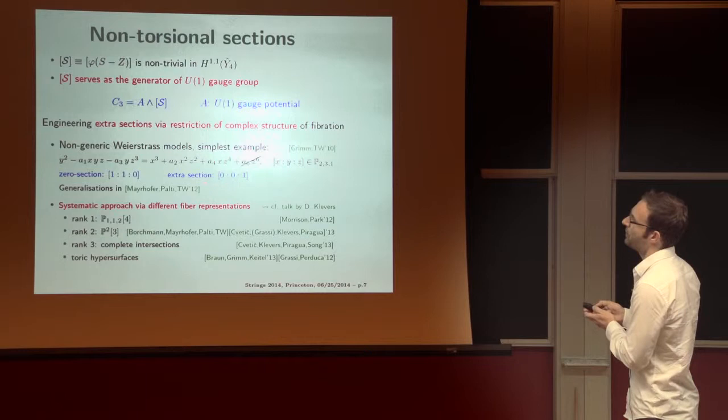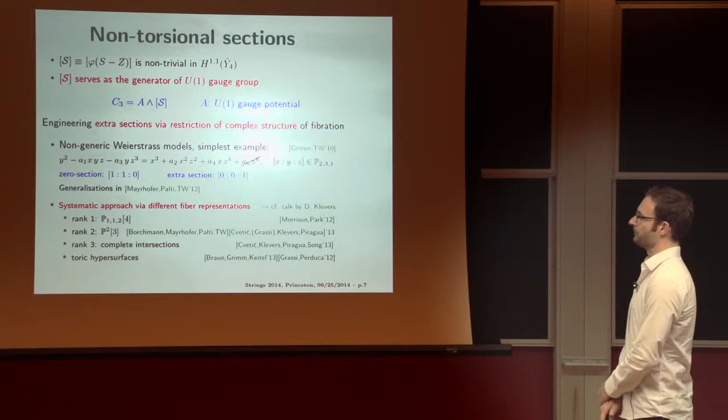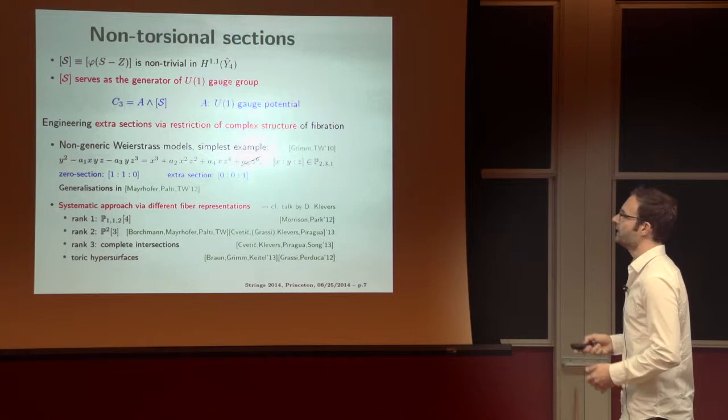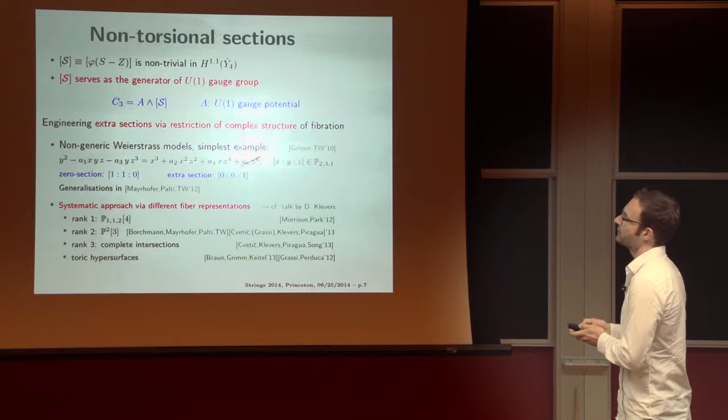And indeed, this can be generalized to factorized Tate models. To treat those models systematically, however, it is more convenient to start by a different type of representation as we heard before break. So for the most general rank 1 model, this was done by Morrison-Park, it's a hypersurface in P(1,1,2) fibration. For rank 2, it's a P(2,3) fibration with blow-ups, as we just heard. And one can go beyond rank 3.